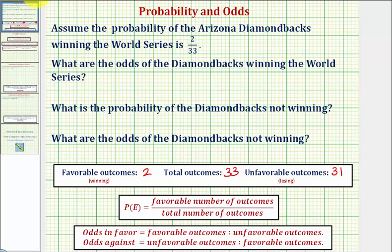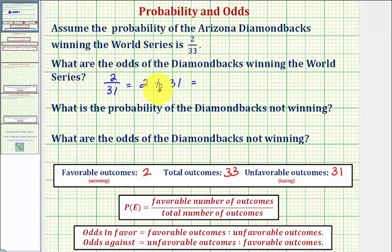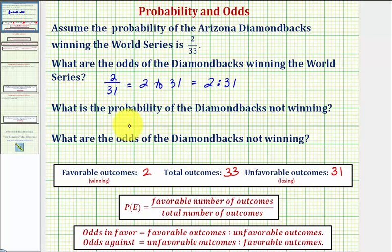Odds can be written several ways — in fraction form, in words as '2 to 31,' or more commonly using a colon as 2:31. The important thing to remember about odds is it must be written as a ratio comparing two numbers, unlike probability, which is often expressed as a fraction, decimal, or percentage.